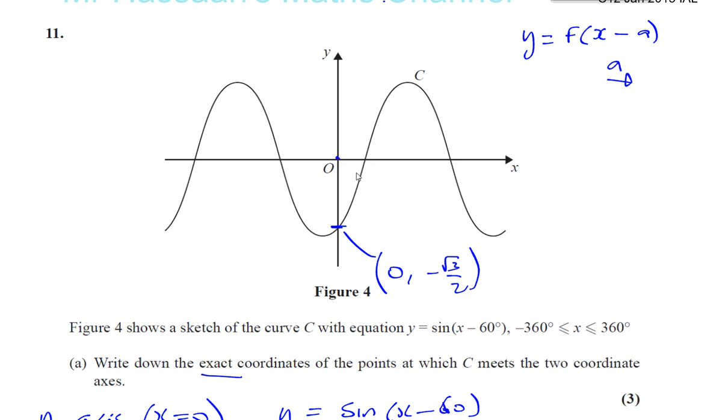Okay, so basically, we know that the sine curve between negative 360 and plus 360 will go like this. That's how it normally looks. That would be 0, that would be 180, and that would be 360, and that would be negative 180, and that would be negative 360. So basically, we've got sine x minus 60.